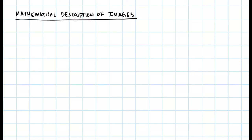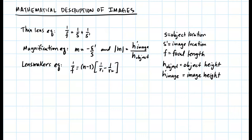Mathematical description of images. In order to mathematically determine the location and characteristics of an image, we have to use three different equations. The first equation is the thin lens equation, sometimes called the image-object equation: 1 over the focal length equals 1 over the object distance plus 1 over the image distance, where the object distance is s, the image distance is s prime, and the focal length is f.